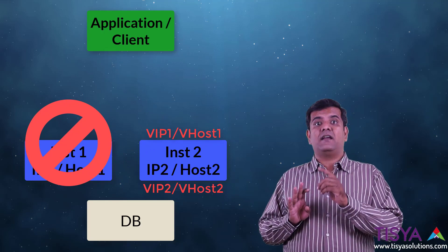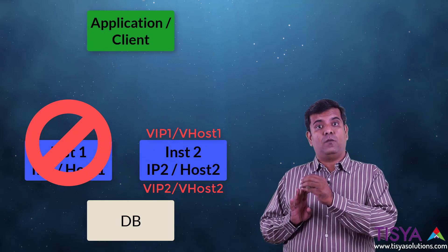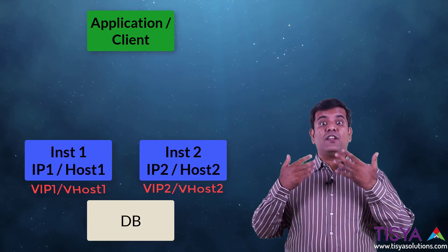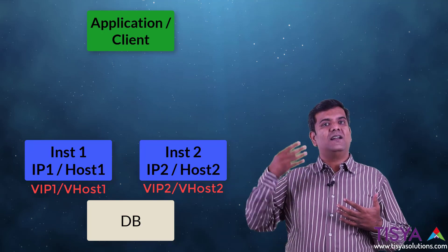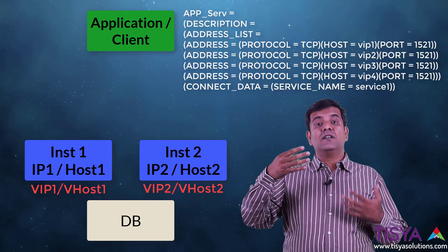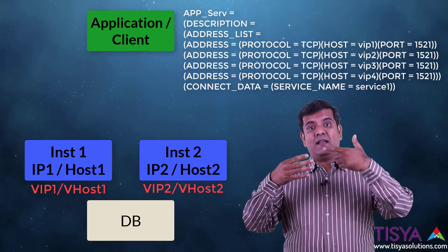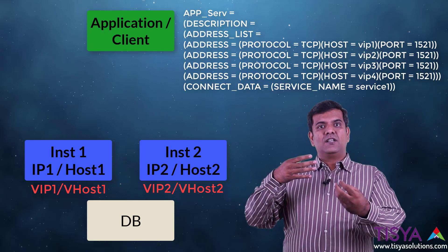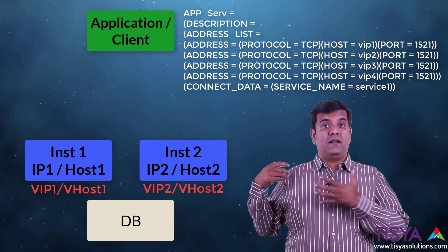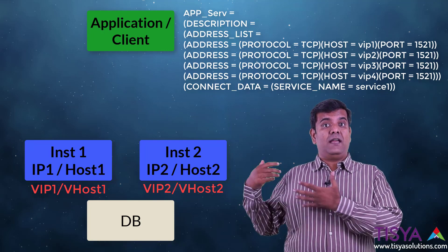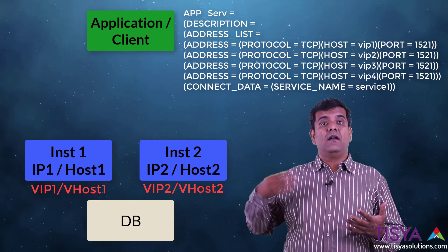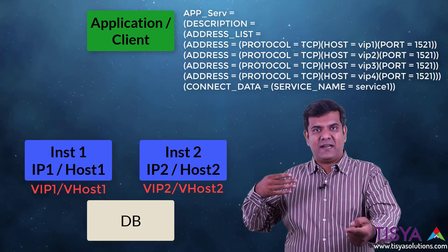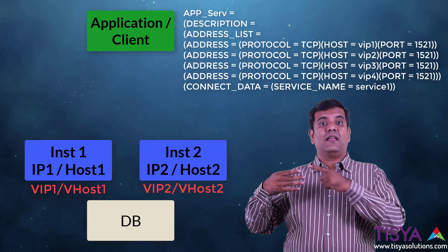Whenever a node goes down, the VIP will fail over to another node and will still respond — but please note, the VIP will not accept new connection requests when it has failed over. It is only going to tell the application that that VIP is down. So in your client, you would list all the VIPs so that when a client wants to connect, it can try any one of them. When a connection is made, it will try the first VIP; if it can connect, it gets connected.